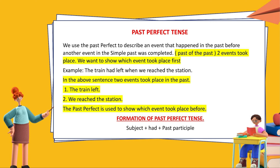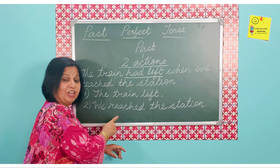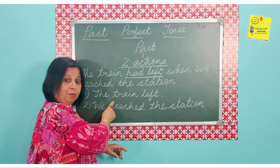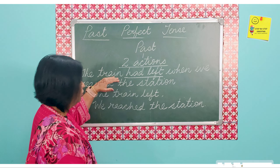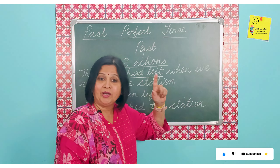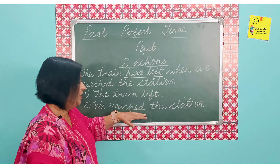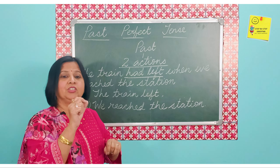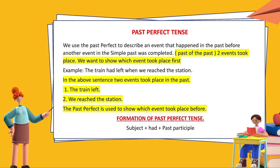The train left — this action got completed before we reached the station. This is when we use the past perfect: to talk about an event that got completed in the past before another event got completed. So we say 'the train had left when we reached the station.' One event, 'the train had left,' and the other is 'when we reached the station,' which is in the simple past.